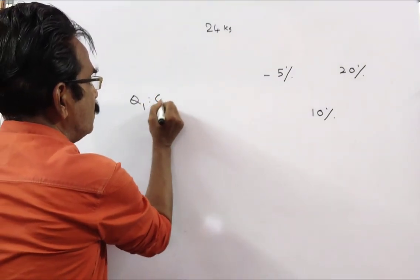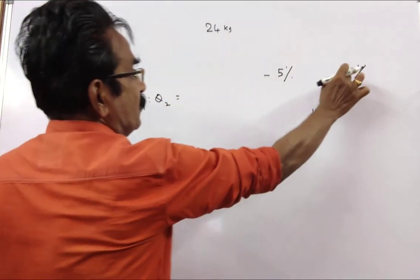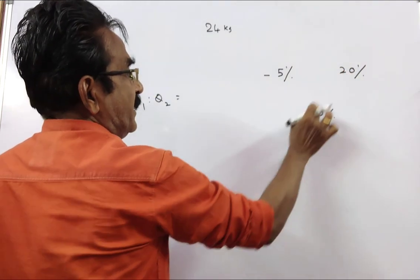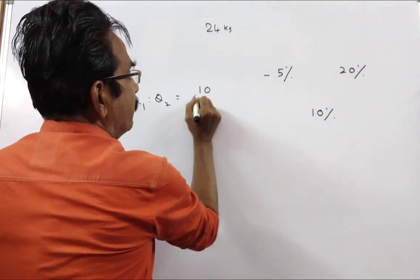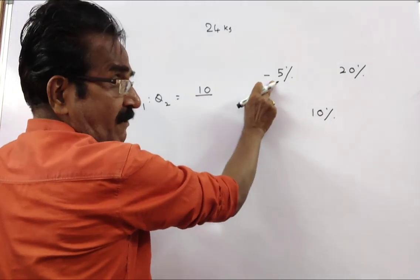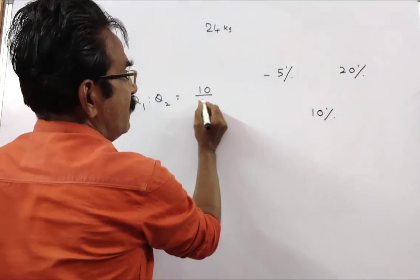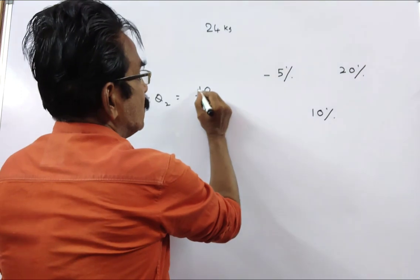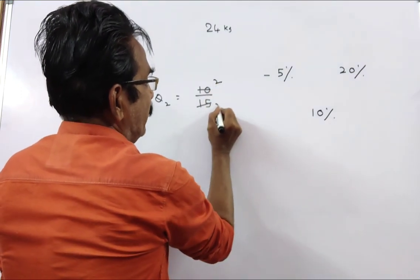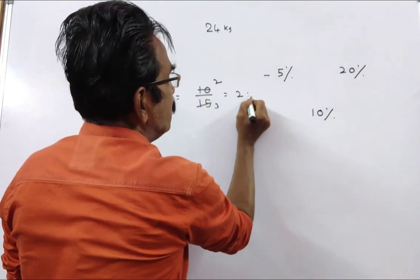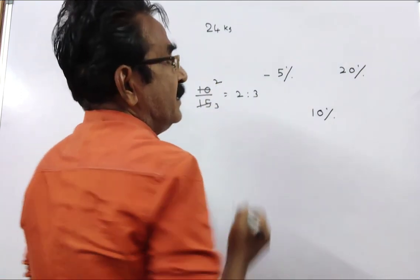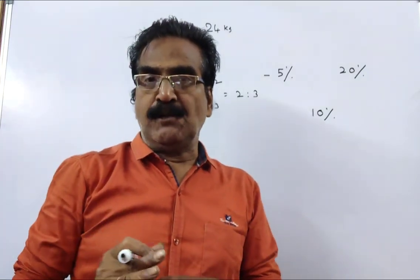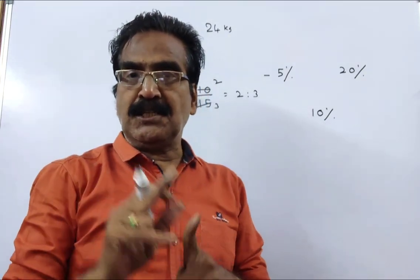Q1 to Q2 is equal to (this minus this) by (this minus this): (20 minus 10) by (10 minus of minus 5). That is 10 by (10 plus 5), which gives 10 by 15. Simplifying, that is 2 to 3. So the quantities ratio is 2 is to 3.